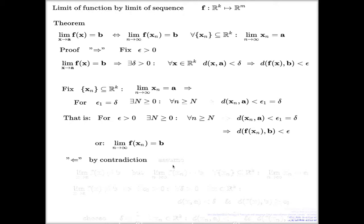What do I do by contradiction? We will assume that this is true, but this one is not true. So we will assume that limit of f of x is not equal b according to the definition of the limit, and yet we have this statement, that for every converging sequence to a, f of that sequence converges to b. That's my assumption.